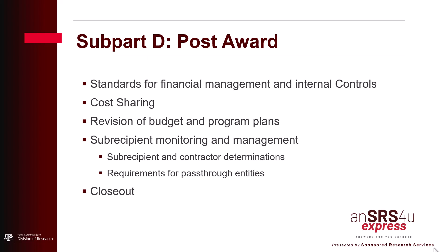Subpart D also provides requirements for a property system to inventory and track equipment purchased and used on a federal award. For closeout, the federal awarding agency or pass-through entity will close out the federal award when it determines that all applicable administrative actions and all required work have been completed by the non-federal entity. This section provides direction to the recipient to submit, no later than 120 calendar days after the end of the period of performance, all financial, performance, and other reports as required by the terms and conditions of the federal award.